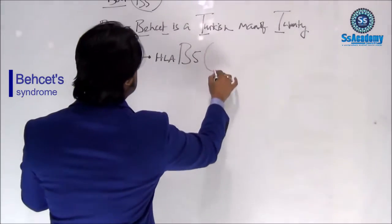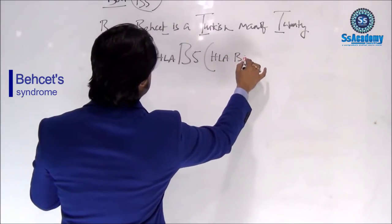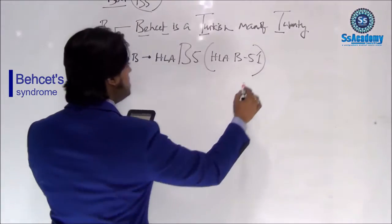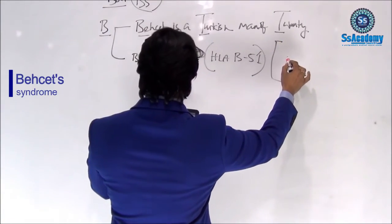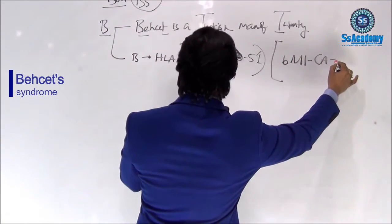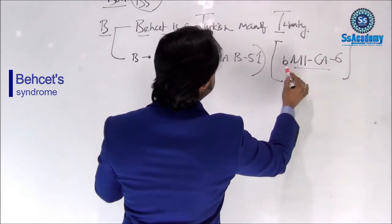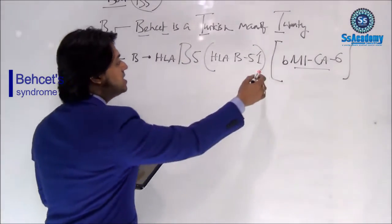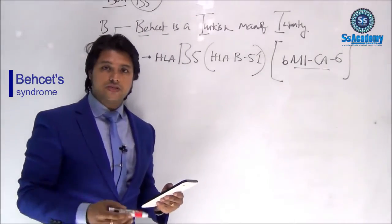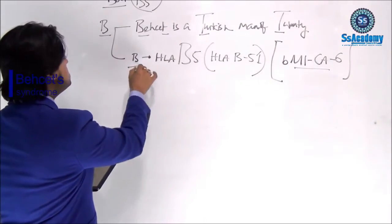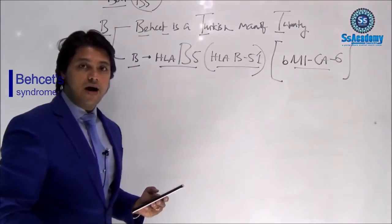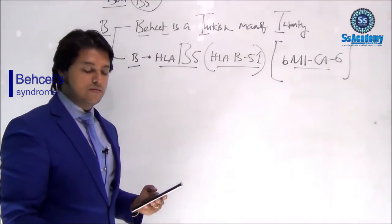The second B stands for the genetic associations: HLA-B51, and also MICA6 allele. So B for HLA-B51, and B for MICA6 — these are the alleles associated with Behçet's syndrome, as already noted in your reading.